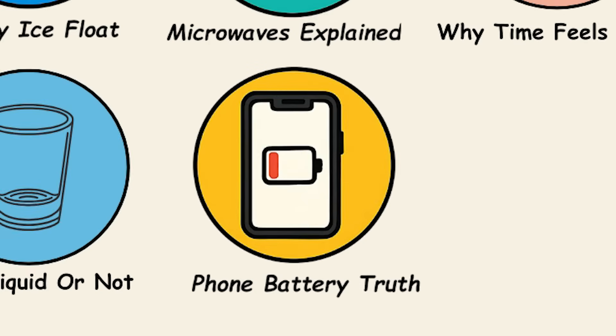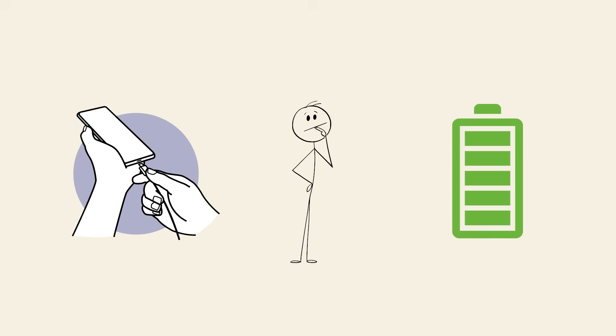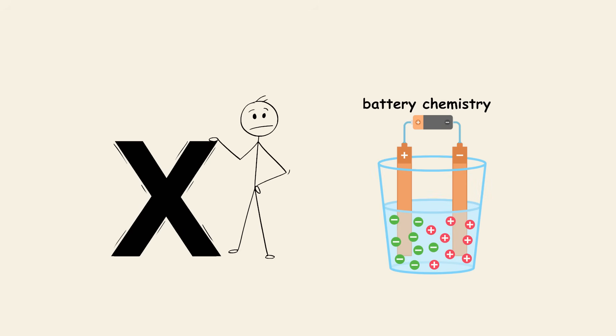Why your phone battery degrades over time. You've probably noticed that your phone doesn't hold a charge like it used to. That's not your imagination, it's basic battery chemistry.